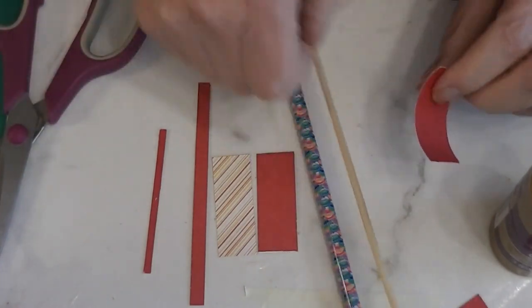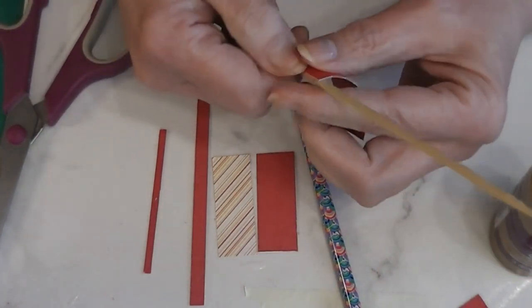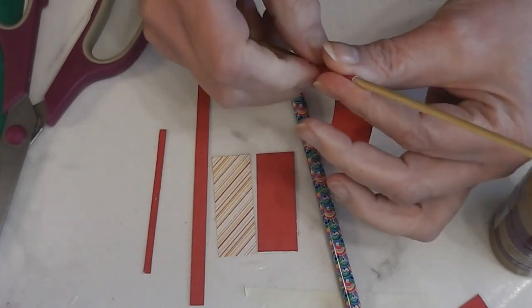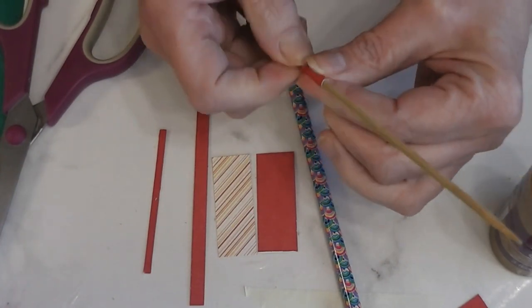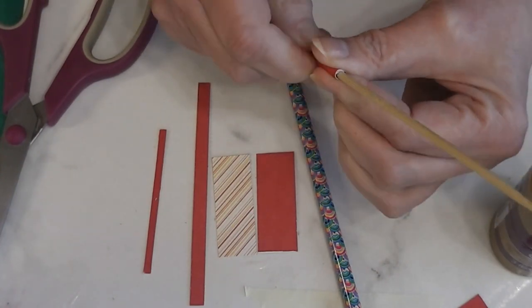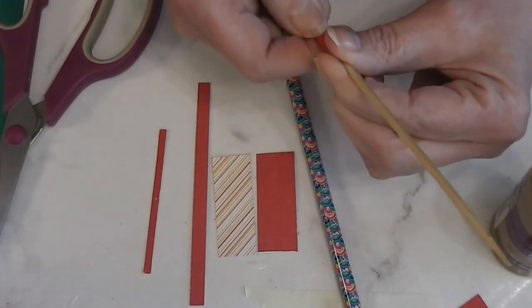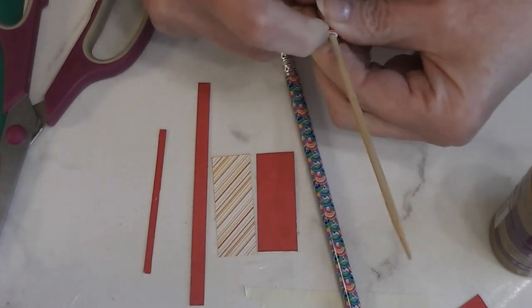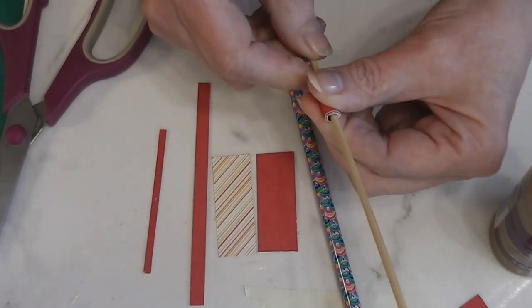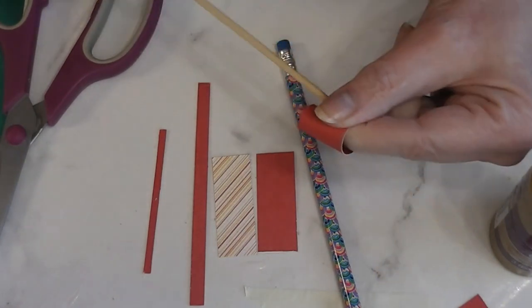You might need to adjust the length of your paper or even if your paper is a little bit different weight. So I've run it on there, now I'm going to wrap it around this bamboo skewer. What I'm doing is I'm pre-curling my paper so that when I put glue on it, it's going to want to curl.